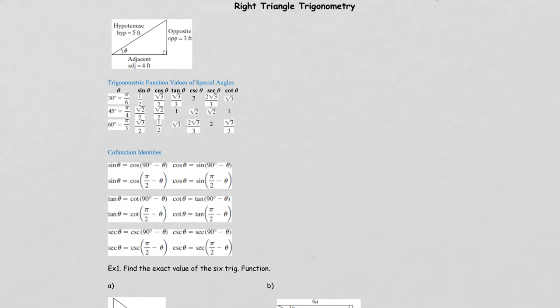Today's lesson, we're going to talk about right triangle trigonometry. So what's right triangle trigonometry? Well, if we have a right triangle, we use the hypotenuse, which is the longest of the sides, the opposite, which is opposite of the given angle, and the adjacent.